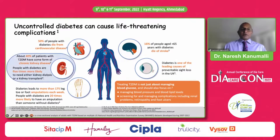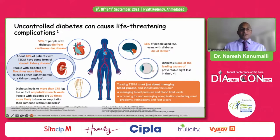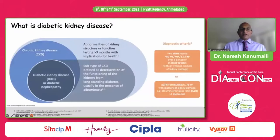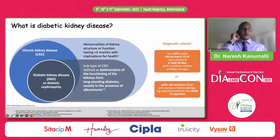About 40% of people with type 2 diabetes have some form of chronic kidney disease, and people with diabetes are five times more likely to need either kidney dialysis or a kidney transplant. Chronic kidney disease is defined as abnormalities of kidney structure or function lasting greater than three months with implications for health.